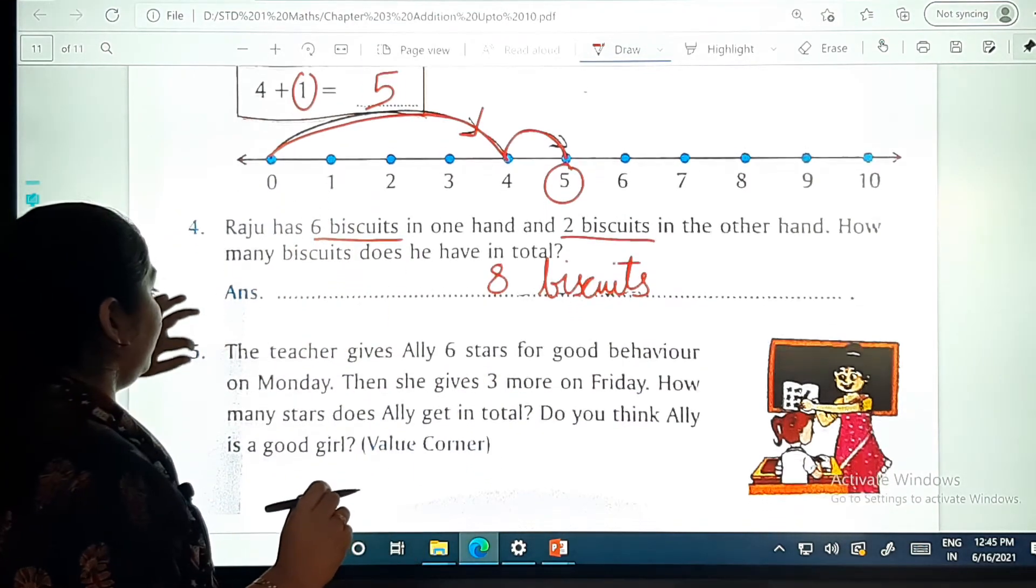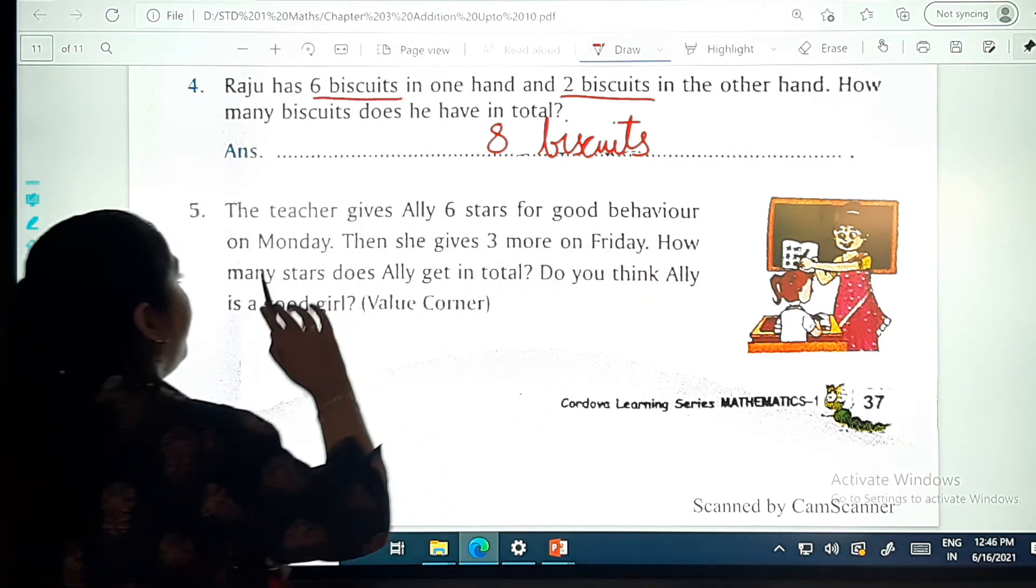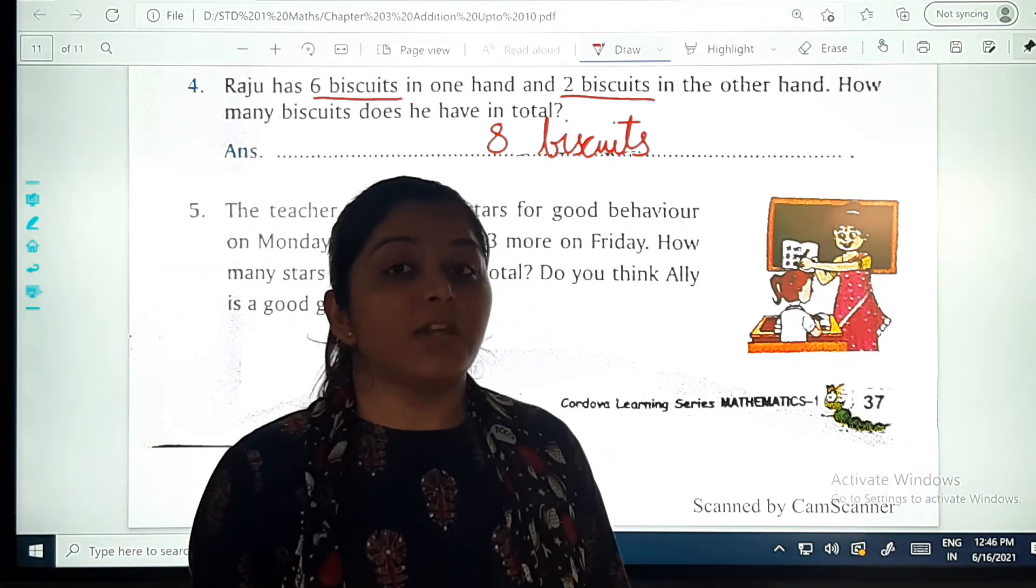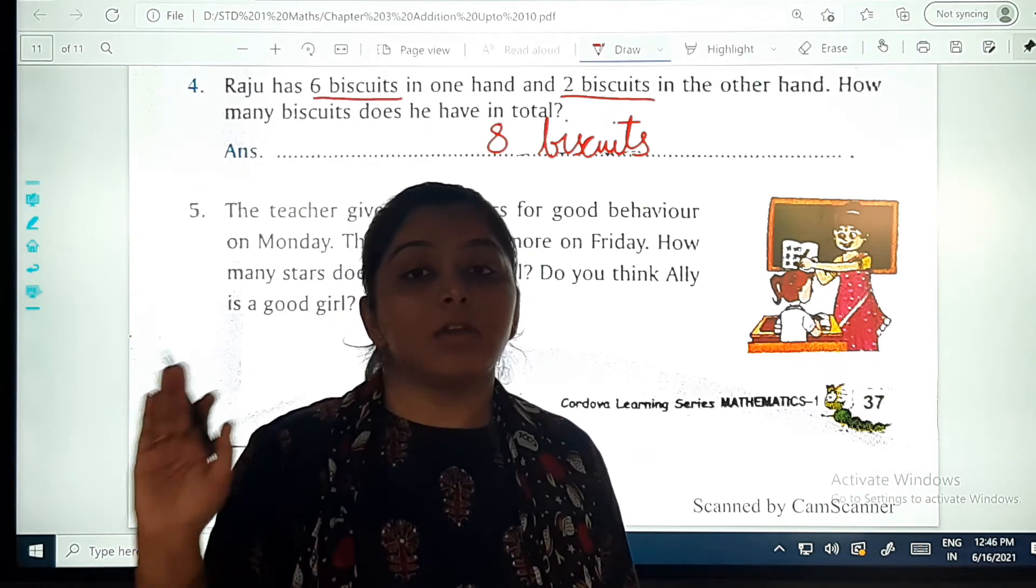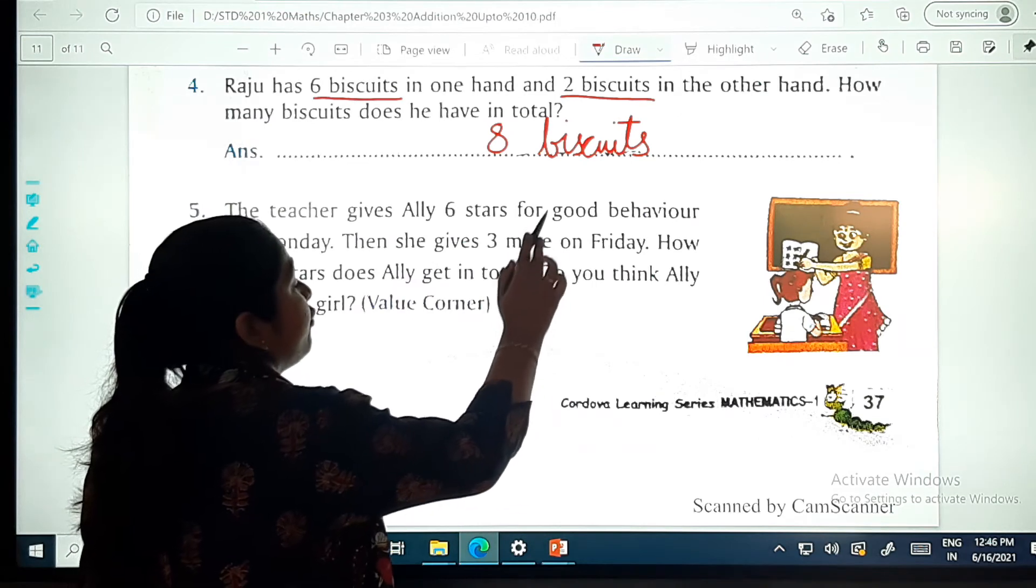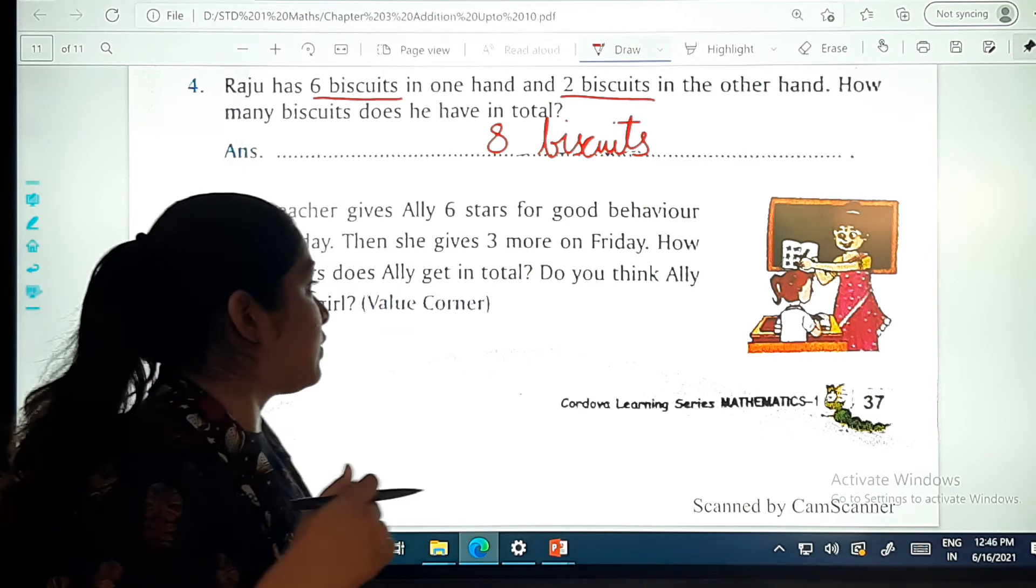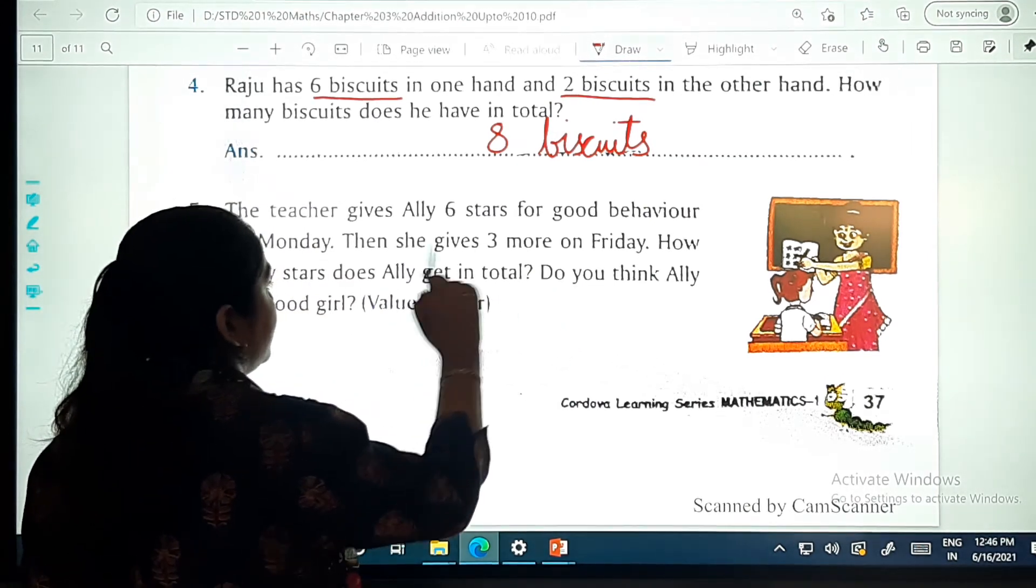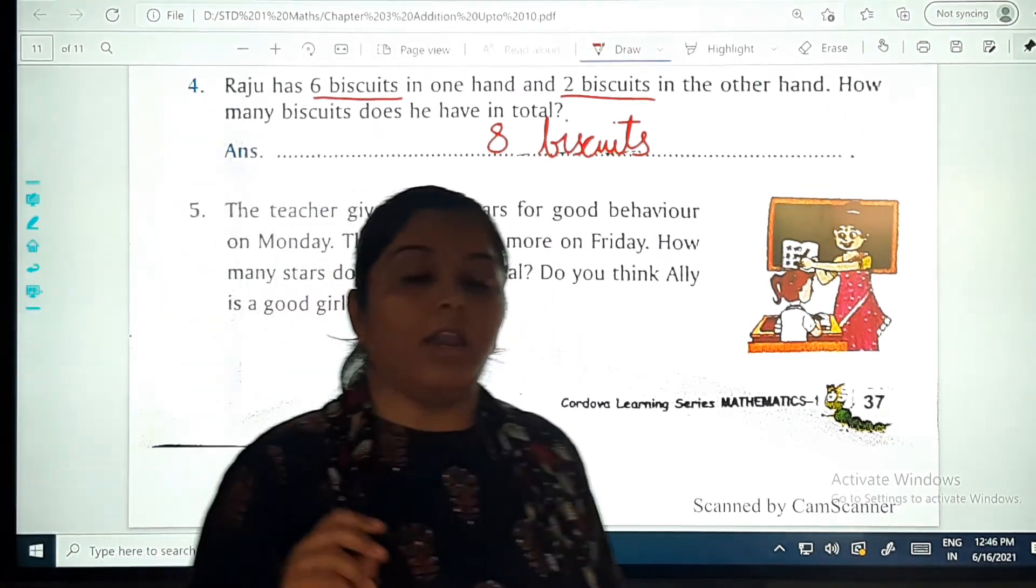Next. The teacher gives Ali six stars for good behavior on Monday. Just jaise ma'am aapko kabhi six stars diye, hai na? Vaisehi teacher ne Ali ko six stars diye Monday ko. Then she gives three more on Friday. Phir three aur stars mile usko. How many stars does Ali get in total? Do you think Ali is a good girl?